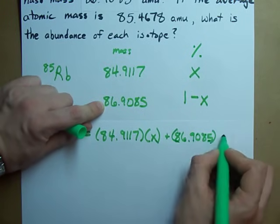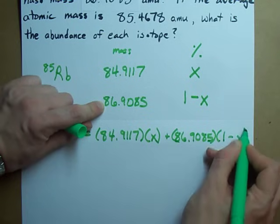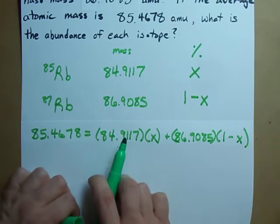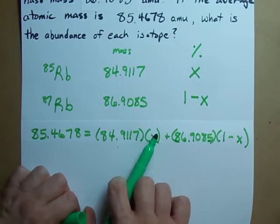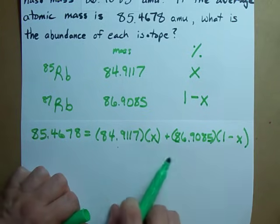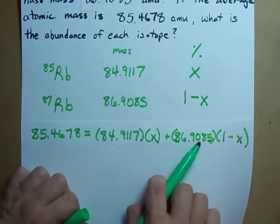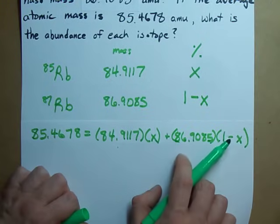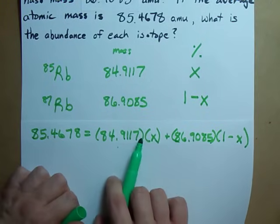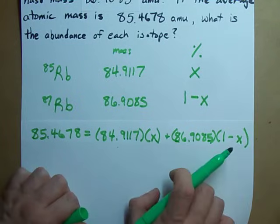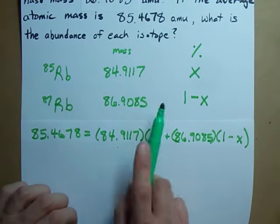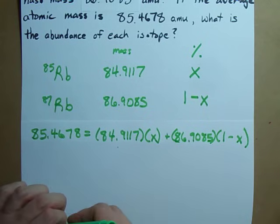I'm just going to add on the second isotope here. 9085 is that second isotope. And so what I have is that this isotope accounts for the fraction X, and this isotope accounts for all the rest of it, 100% minus whatever was accounted for here.